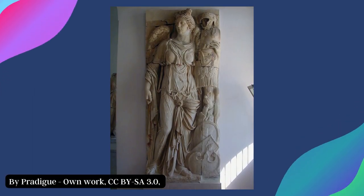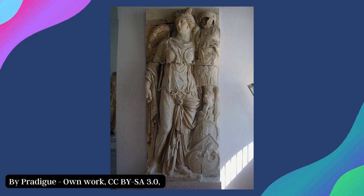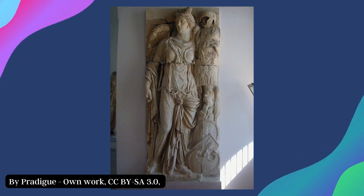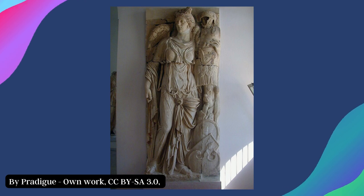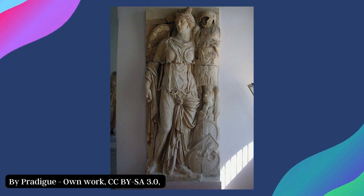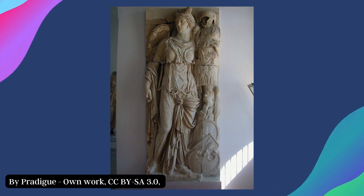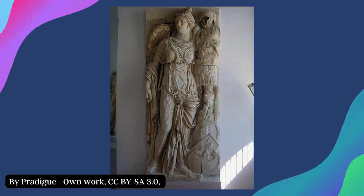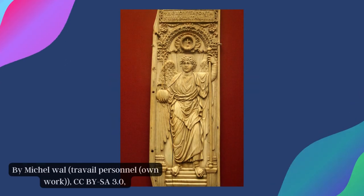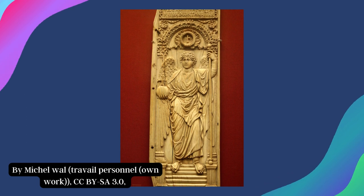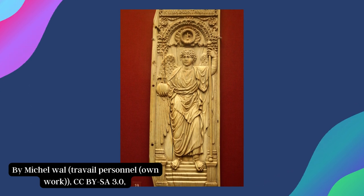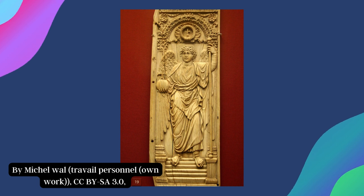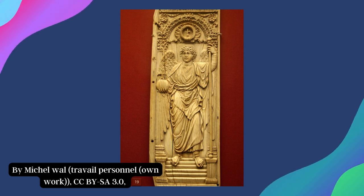The oldest known examples of winged angels date back to the 4th century, including some bas-reliefs from Carthage and an ivory representation of St. Michael. The latter is part of a diptych in the British Museum, and shows the archangel Michael standing on the upper steps of a decorated doorway, holding a staff in one hand and a globe with a cross on top in the other. This figure is exceptionally well-crafted.